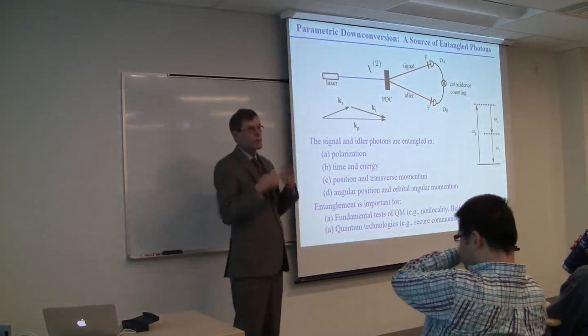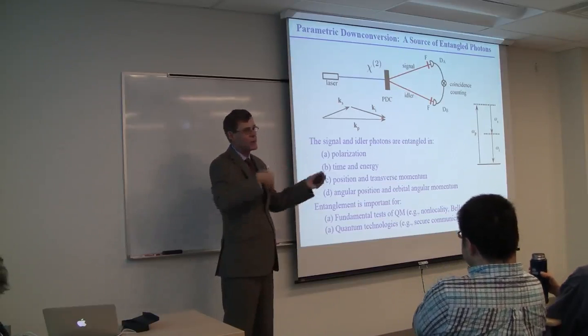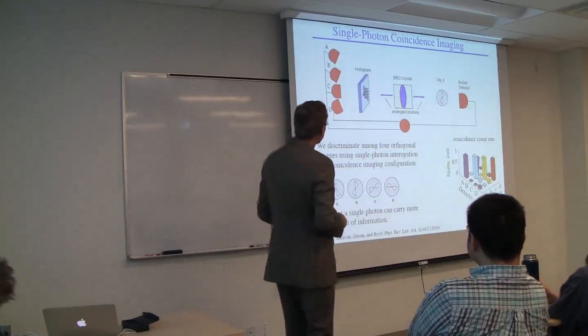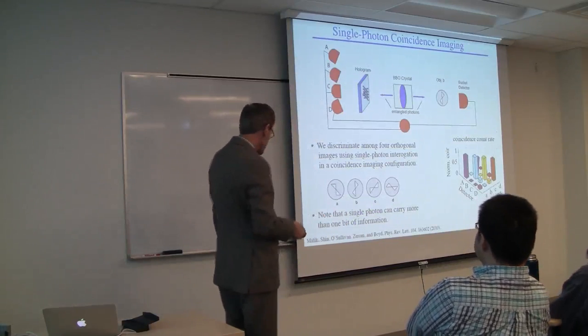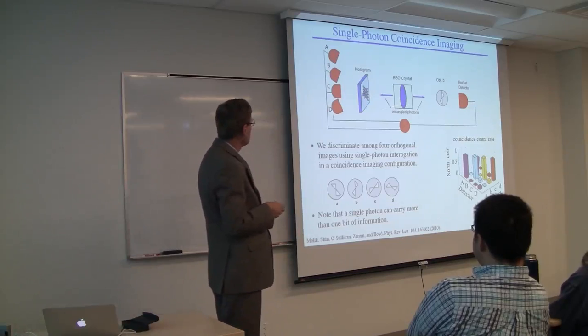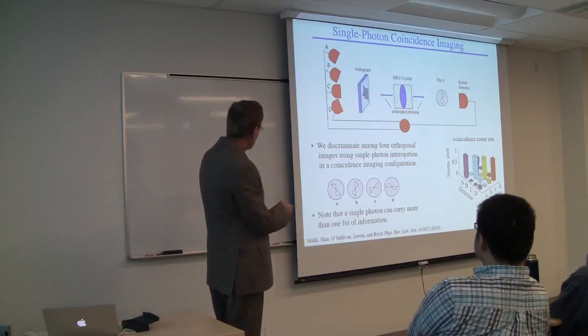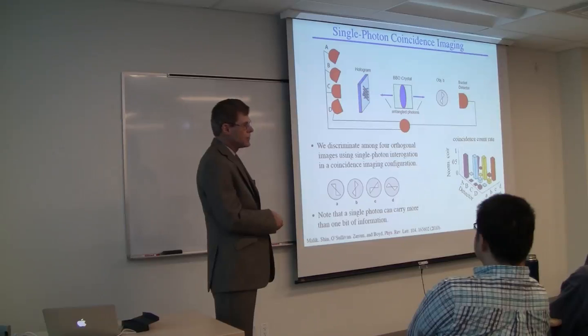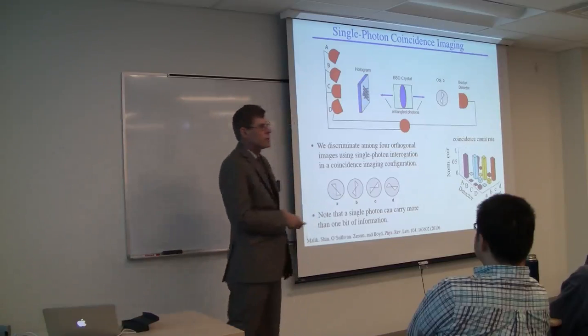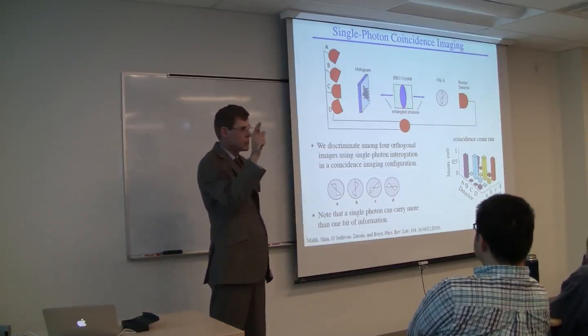People sometimes talk about quantum weirdness, and I think this is the best example of how quantum effects can be very different from our classical intuition. This is an example of something my students and I did six years ago. We used this property of entangled photons to answer the following question: Here is an object. I know the object is A, B, C, or D, but I don't know which. I want to determine which object is here by making only a measurement with a single photon.